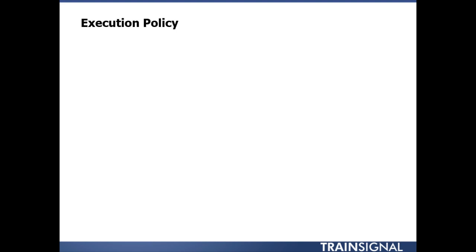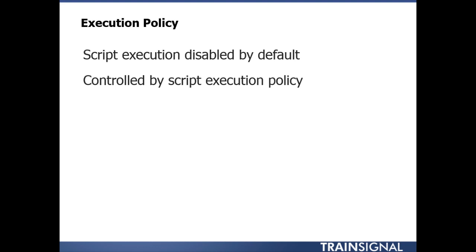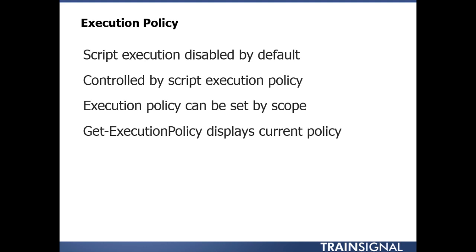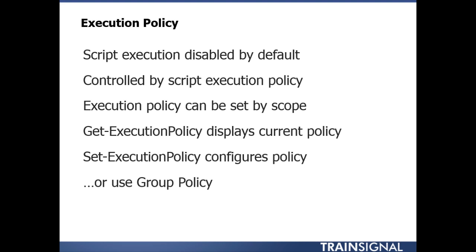The execution policy by default on a brand new installation of PowerShell is to not allow any scripts to be run. You can type all the commands you want, open up a script file, and copy and paste the results into a PowerShell session — that will still work. But by default you cannot execute a PowerShell script. In PowerShell version 3, you can set the execution policy by scope, such as the current user or the local machine. The cmdlet get-ExecutionPolicy displays the current policy, and set-ExecutionPolicy allows you to configure it. You can do this on a per-machine basis, or alternatively use Group Policy to push out settings to your clients or servers.